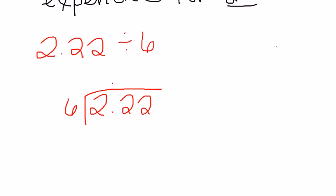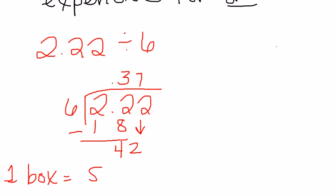Six will not go into two, so we move on and six will go into 22 three times. Three times six is 18. Now we subtract 22 minus 18 is four. And we bring down our two. Six will go into 42 seven times. So our first offer means that one box equals 37 cents.